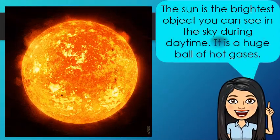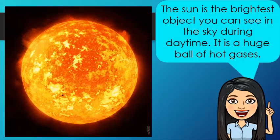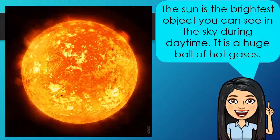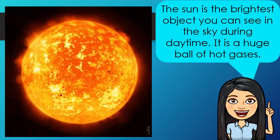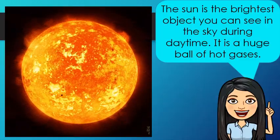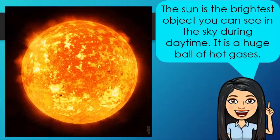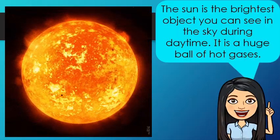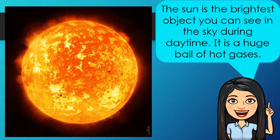The sun is considered the brightest object you can see in the sky during daytime. It is a huge ball of hot gases. The sun is one of the billion stars in the galaxy. It looks bigger and brighter because it is closer to Earth than any other star. It makes its own light and heat. The energy coming from the sun is called solar energy.